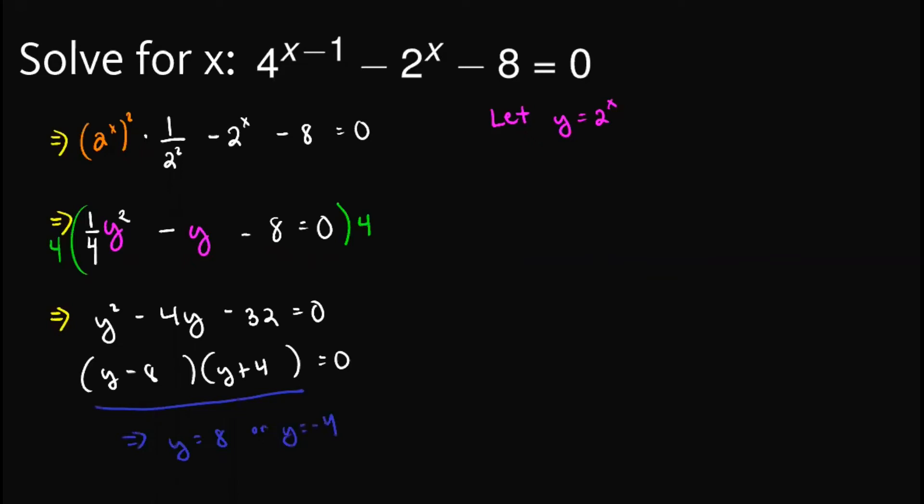So we have two cases. So if we have case 1, y is equal to 8. If y is equal to 8, then we have 2 raised to x is equal to 8. Which is simply 2 raised to x equals 2 cubed. So we know that x is equal to 3.